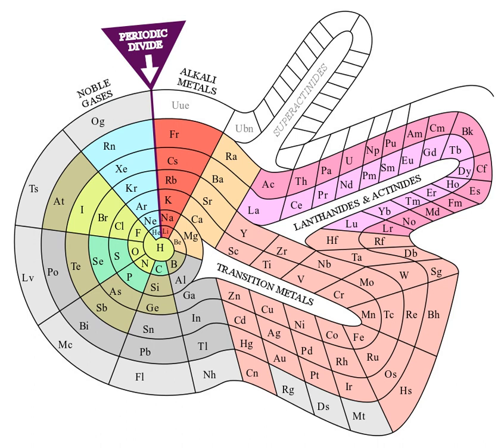Alternative periodic tables are tabulations of chemical elements differing significantly in their organization from the traditional depiction of the periodic system. Several have been devised, often purely for didactic reasons, as not all correlations between the chemical elements are effectively captured by the standard periodic table.